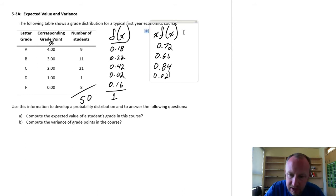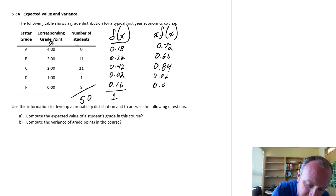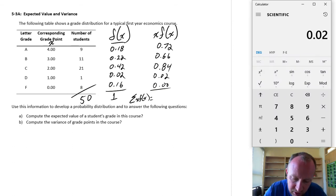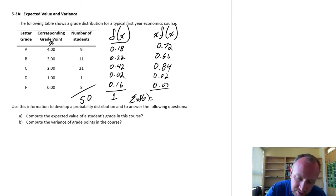And finally, 0 times 0.16. Well, that's going to be 0. So now we're going to add all of these up. So here, I'm going to be summing all of those weighted values. So 0.02 plus 0.84 plus 0.66 plus 0.72, and I have a value of 2.24.